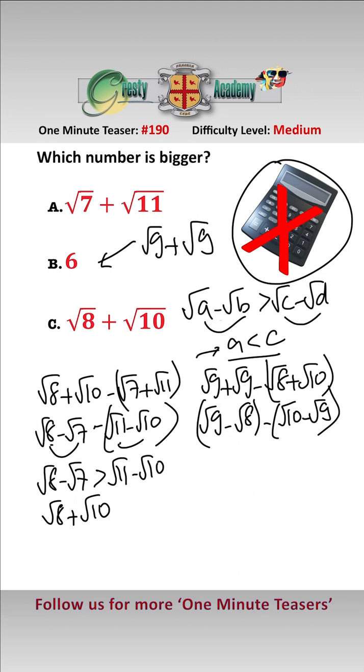Again, there's one difference between them, and as A is less than C, 9 is less than 10, we know that root 9 minus root 8 is greater than root 10 minus root 9.